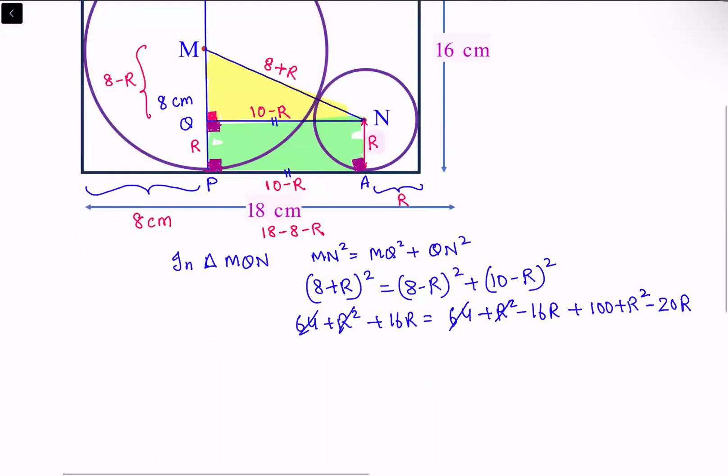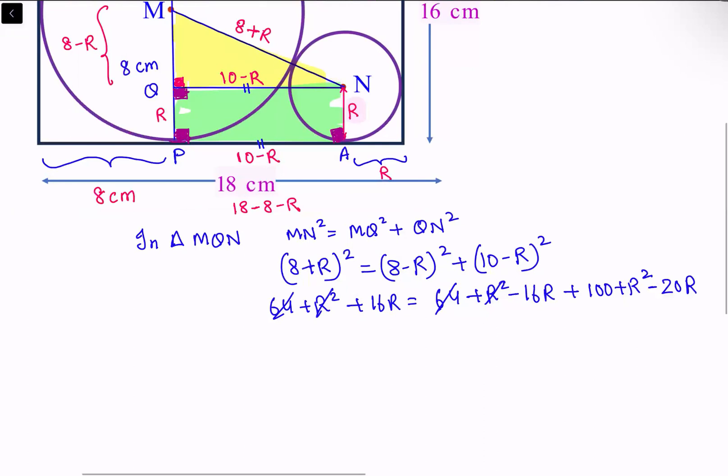Taking all terms to one side, we're left with R² - 52R + 100 = 0.